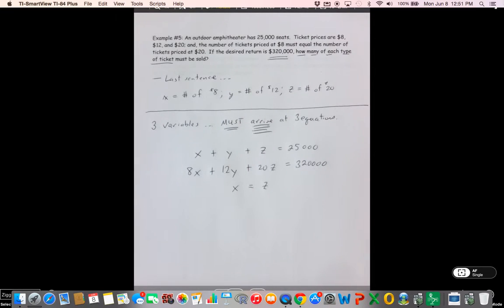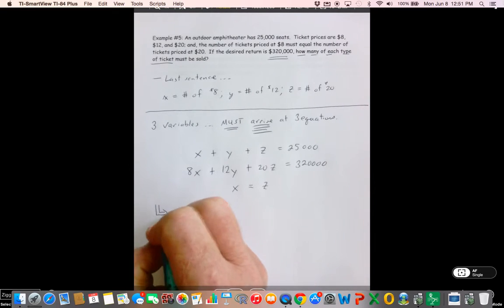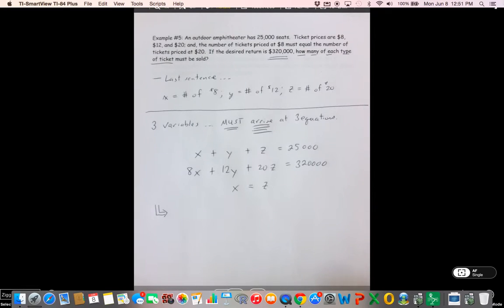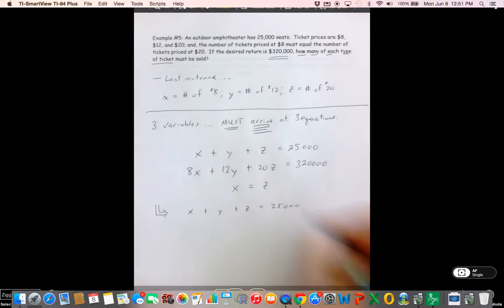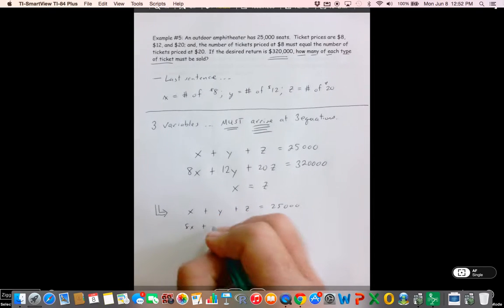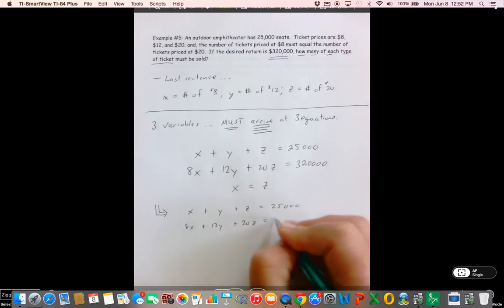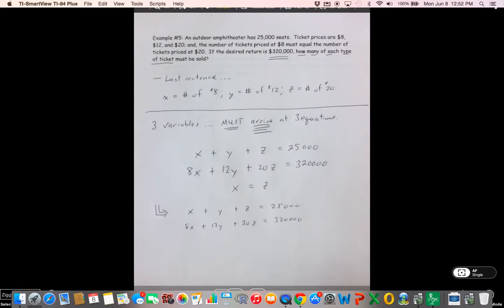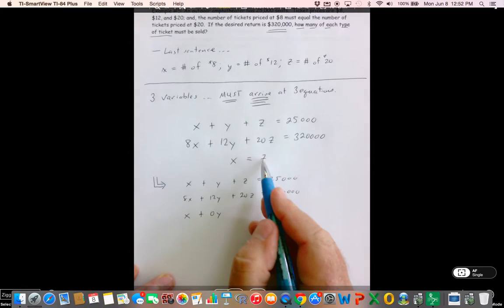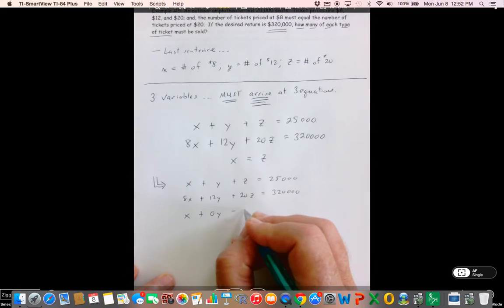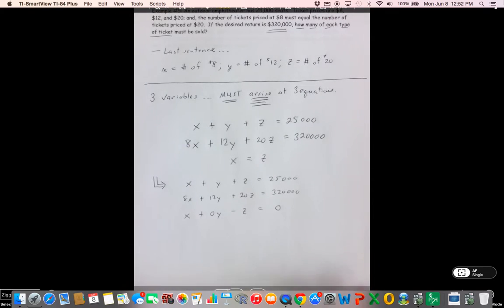Now a lot of students will say, well I'm done. Well, you're really not done because we need to put this in a form that leads us nicely into an augmented matrix. So I have X plus Y plus Z equals 25,000. I have 8X plus 12Y plus 20Z equals 320,000. And then this one down here, X's and Z's, I've got to get these in X's and Y's and Z's and numbers. I've got to appreciate, respect if you will, the column situation. So I've got my X on the left side of the equal sign. I don't have any Y's. And when I bring this Z across, I have negative Z and nothing left over here.